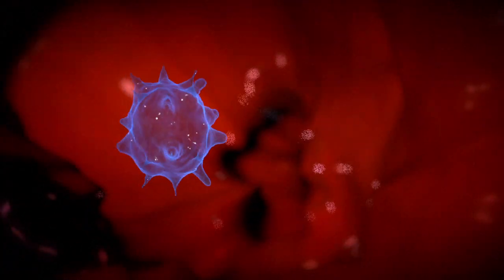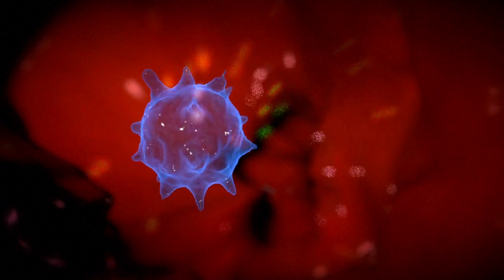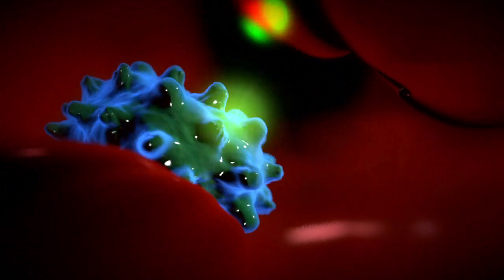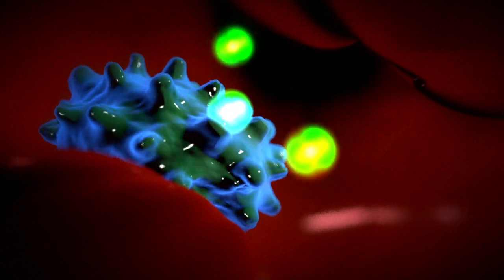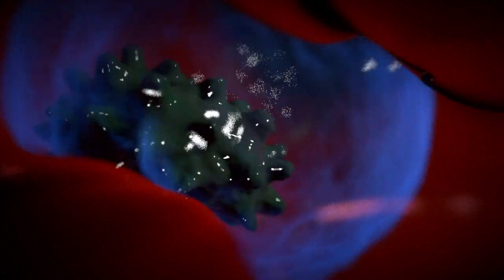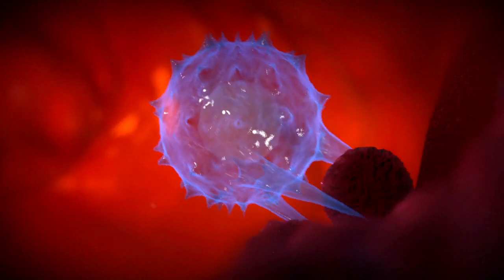B lymphocytes have the capacity to produce vast numbers of antibodies. Circulating around the body, antibodies latch onto these antigens and neutralise them, allowing macrophages to eliminate them. T lymphocytes identify and destroy infected cells.